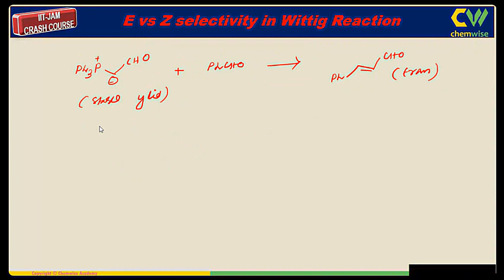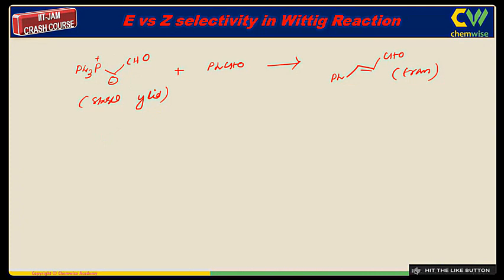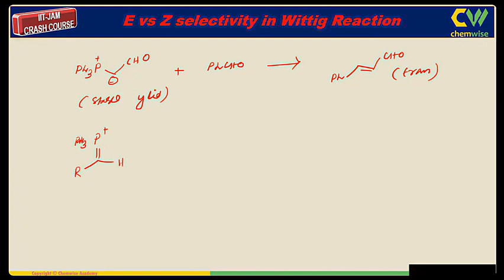Let us understand what happens and how the reaction proceeds. One thing to mention: when I say a stable ylide is 'that stable,' I mean chemical companies sell them for lab purposes — it is commercially available and very much stable. Now let us take a closer look at what happens with a normal ylide. It is in the delocalized state. The aldehyde approaches the ylide orthogonally.